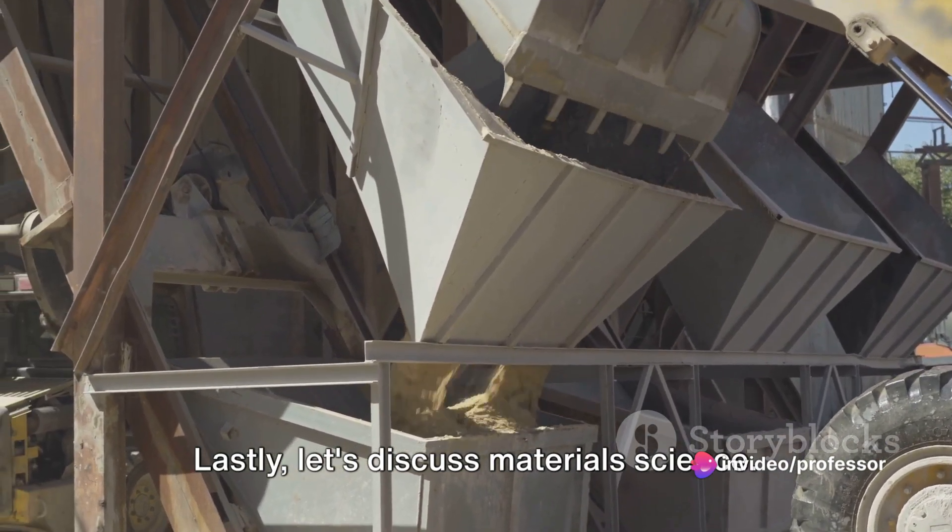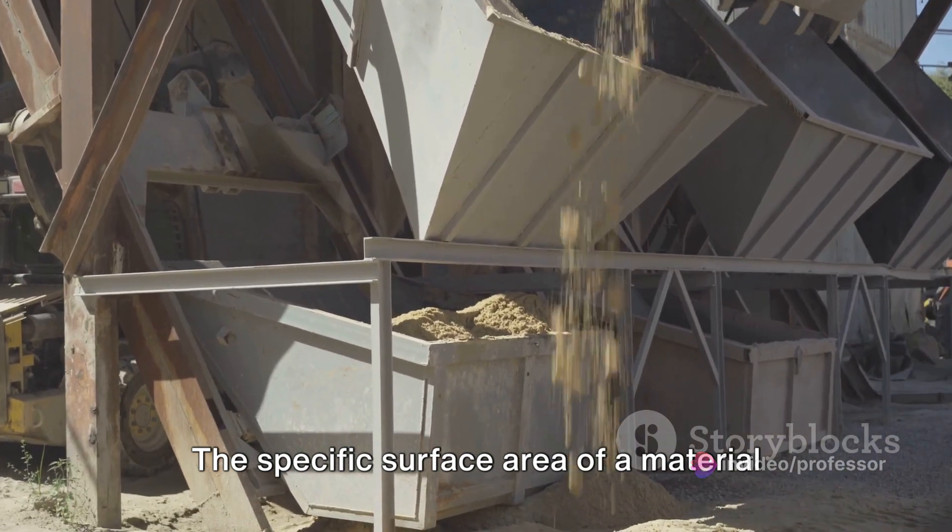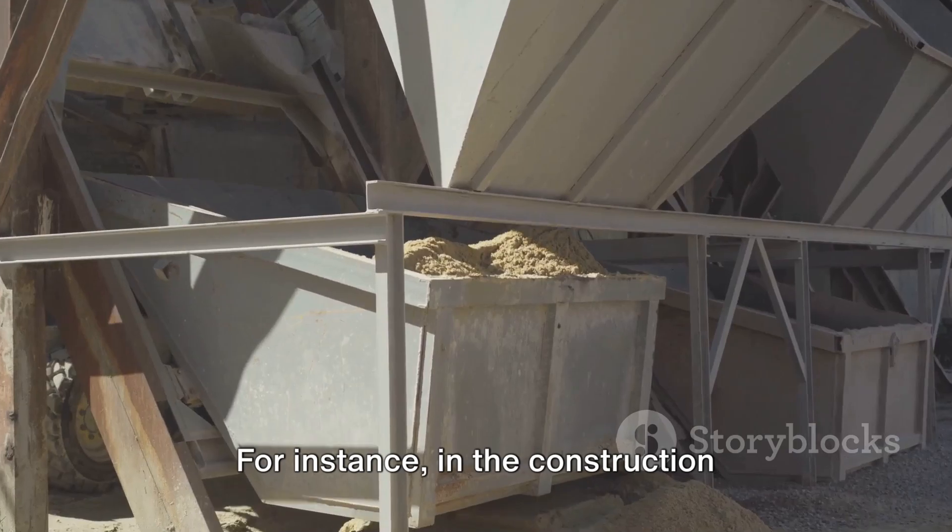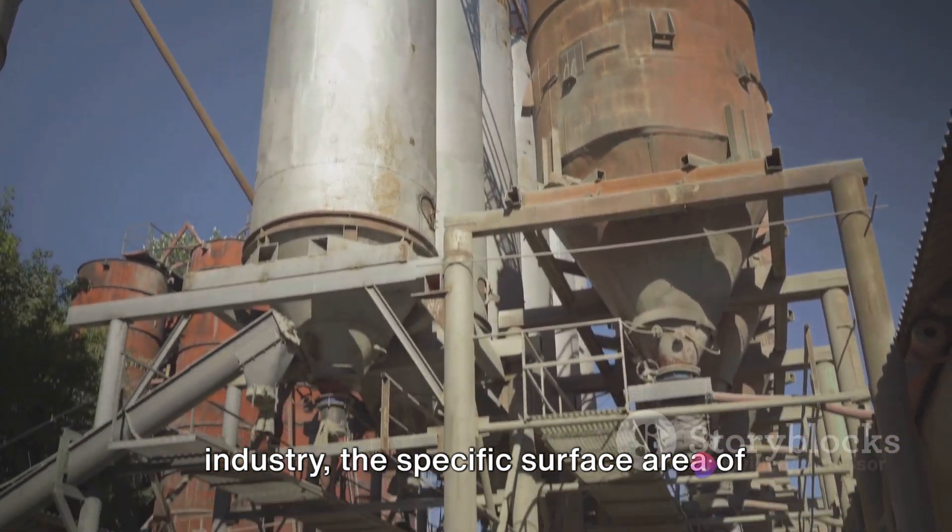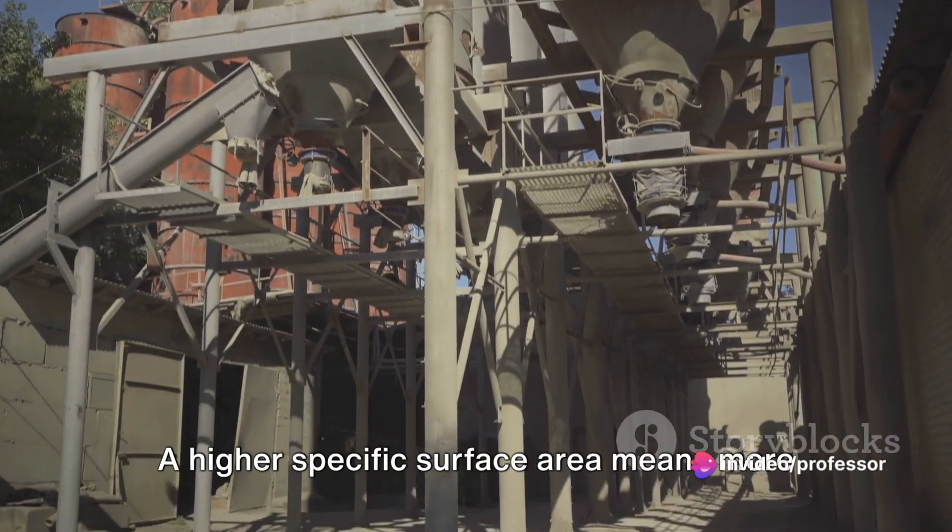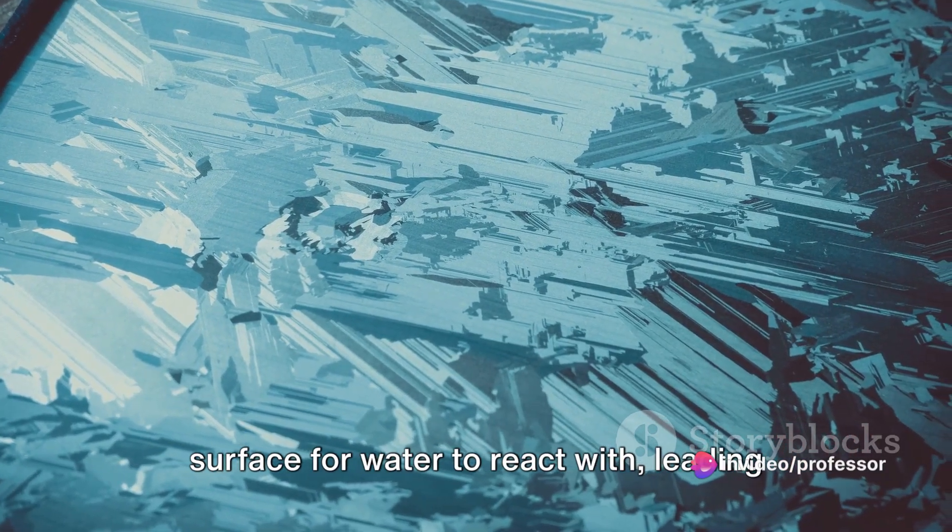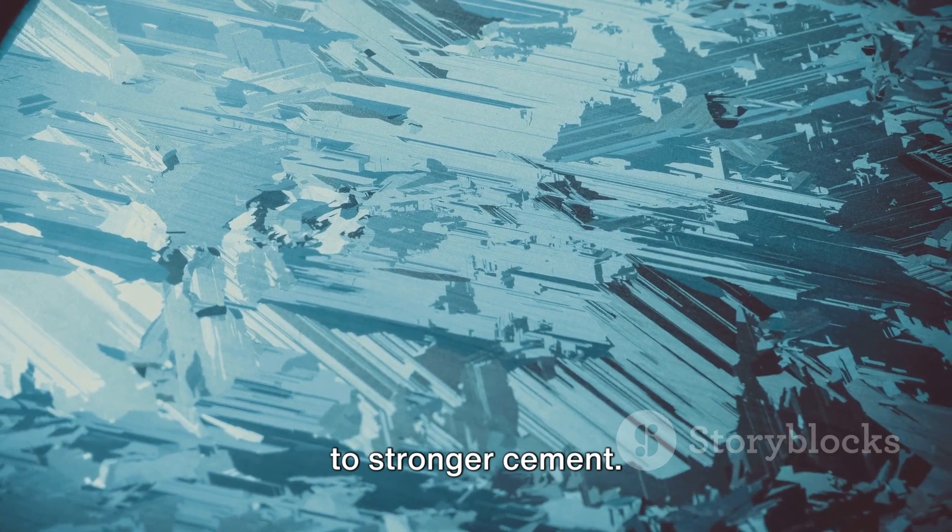Lastly, let's discuss materials science. The specific surface area of a material can greatly influence its properties. For instance, in the construction industry, the specific surface area of cement is a critical factor. A higher specific surface area means more surface for water to react with, leading to stronger cement.